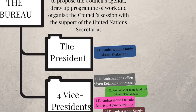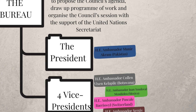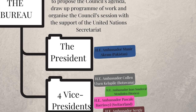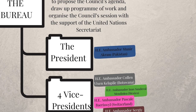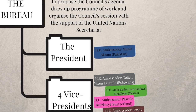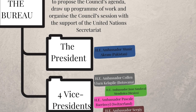ECOSOC meetings are presided over by presidents elected from the member states of the council to serve a one-year term, also known as a session. Currently, the president of ECOSOC is His Excellency Muni Ikram, the ambassador and permanent representative of Pakistan, who was elected in July 2020.